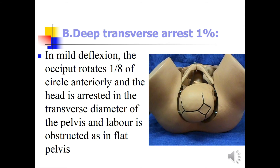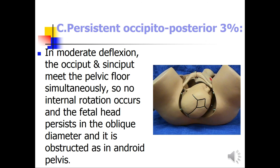Deep transverse arrest occurs in one percent of cases: in mild deflection, the occiput rotates one-eighth of a circle anteriorly and the head is arrested in the transverse diameter of the pelvis, causing obstructed labor, as seen in flat pelvis. Persistent occipital posterior occurs in three percent: in moderate deflection, the occiput and sinciput meet the pelvic floor simultaneously, so no internal rotation occurs and the fetal head persists in the oblique diameter, becoming obstructed, as seen in android pelvis.